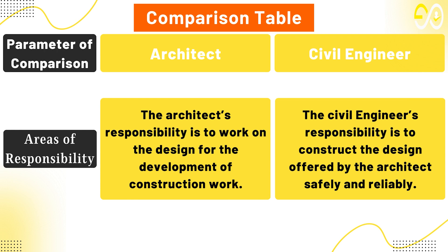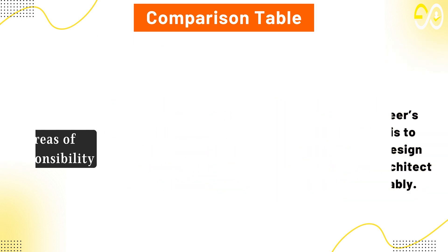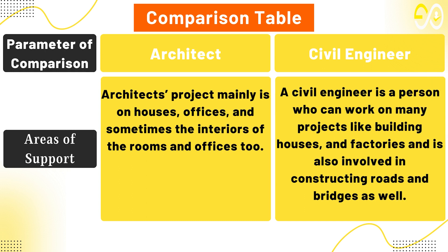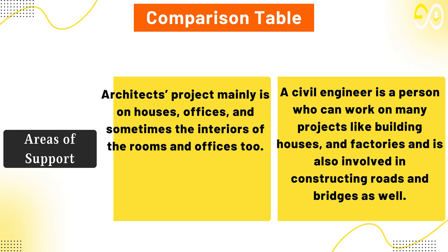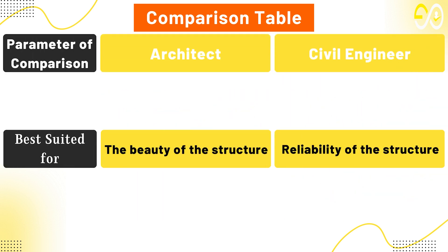Areas of responsibility: The architect's responsibility is to work on the design for the development of construction work. The civil engineer's responsibility is to construct the design offered by the architect safely and reliably. Areas of support: The architect's projects mainly involve houses, offices, and sometimes the interiors of rooms and offices. A civil engineer can work on many projects like building houses and factories, and is also involved in constructing roads and bridges. Best suited for: Architect — the beauty of the structure. Civil engineer — the reliability of the structure.